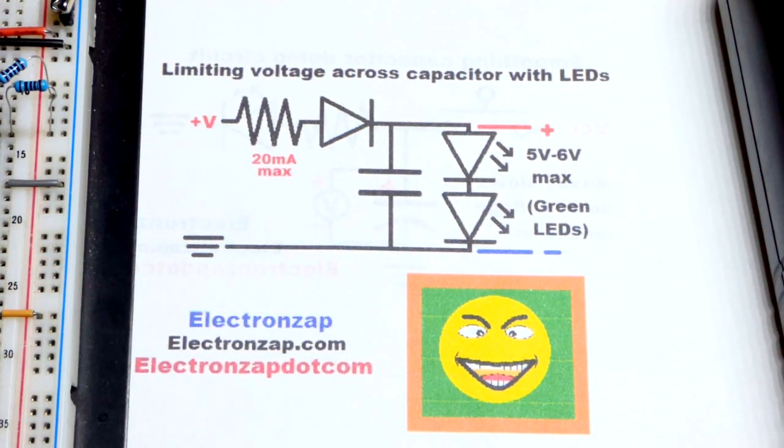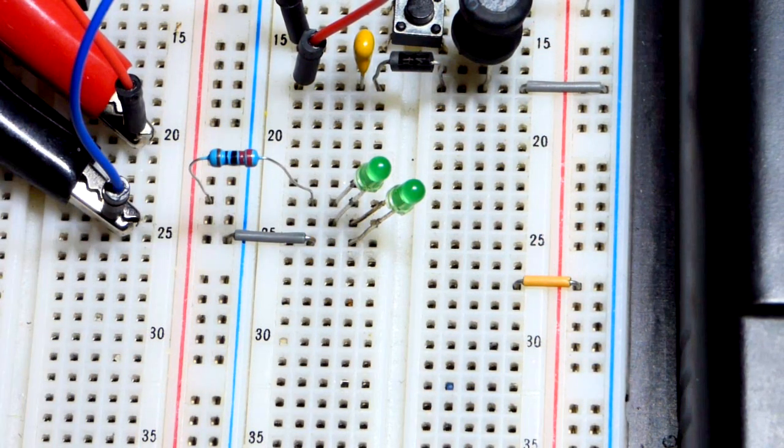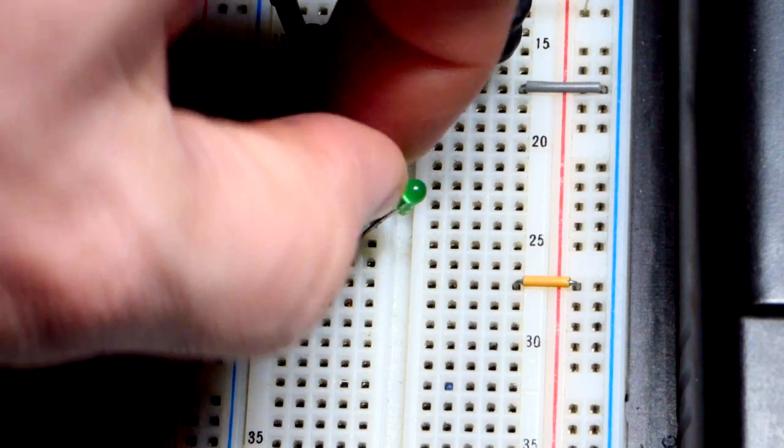Over here we have the two green LEDs that I'm going to use. You can see the resistor to the positive supply there. We're not going to do much voltage so 220 ohms.